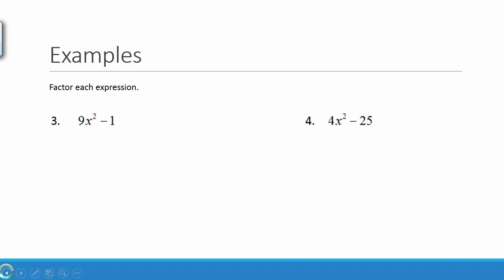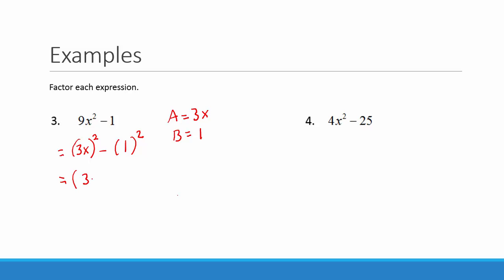In our next example, we have 9x squared minus 1. We can rewrite 9x squared as the quantity 3x all squared, and 1 as 1 squared. So for the difference of squares formula, a equals 3x and b equals 1. Following the formula, we get the quantity 3x plus 1 times the quantity 3x minus 1. This is the factored form of 9x squared minus 1.